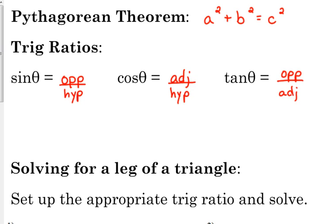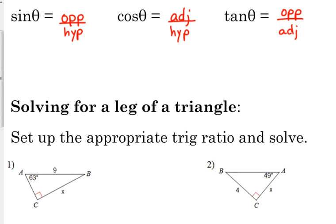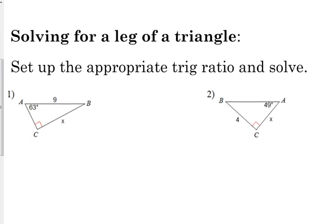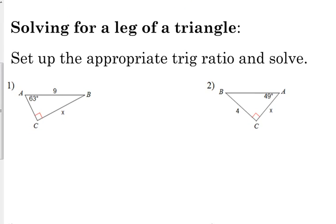The first scenario that we're going to look at is solving for a leg of a triangle. Now, we did some of that on Thursday, but on Thursday, we had two out of the three legs. If you look at these, we only have one out of the three, but we're given an angle measurement. So let's look at how we're going to do this. I always identify what part of the triangle I have and what part of the triangle I'm looking for. So when I look at this first diagram on number one, I see that I've got nine, and that nine is my hypotenuse.